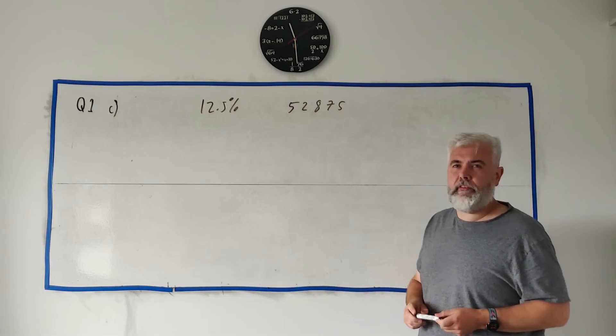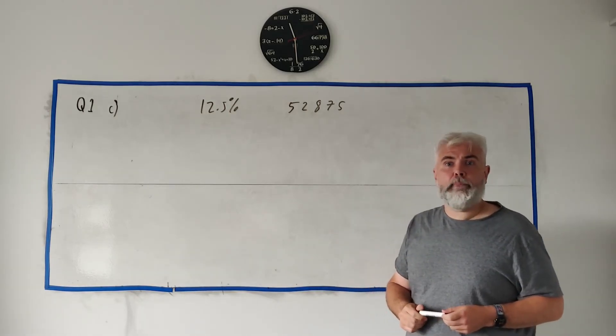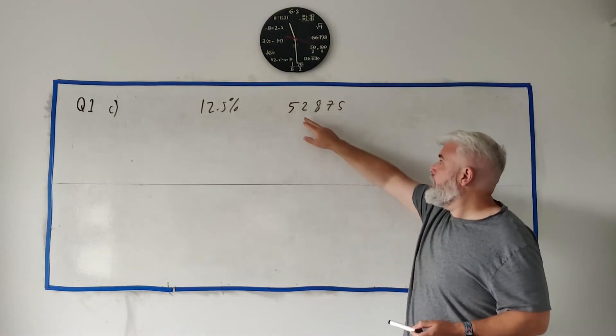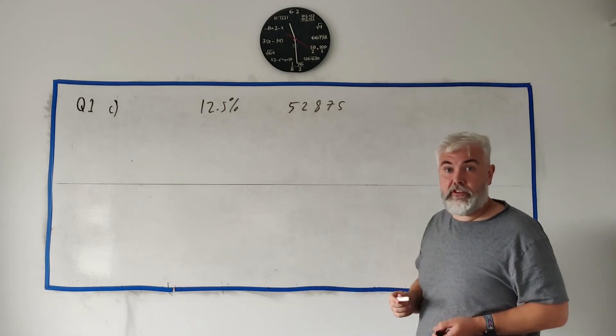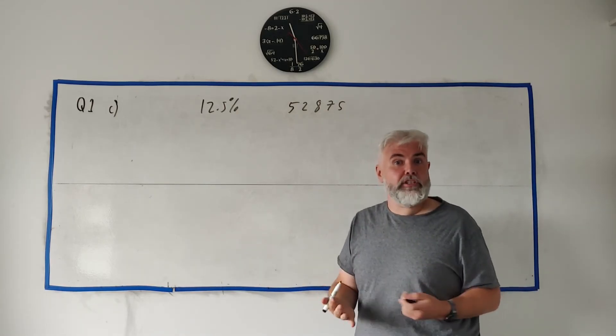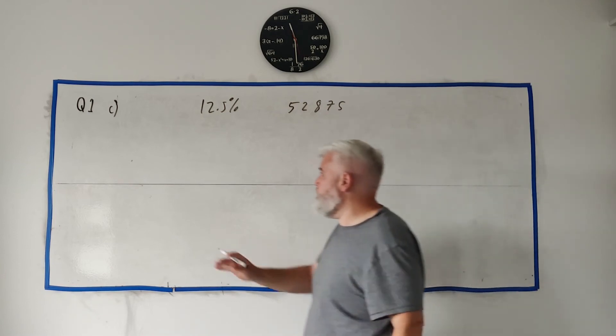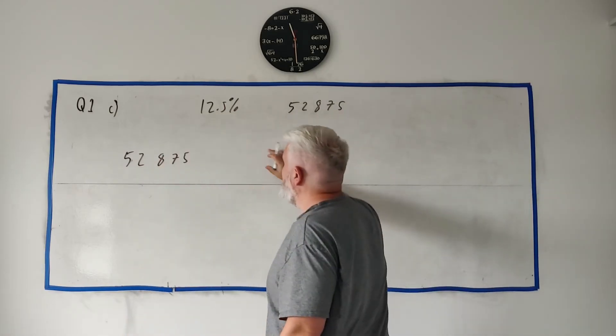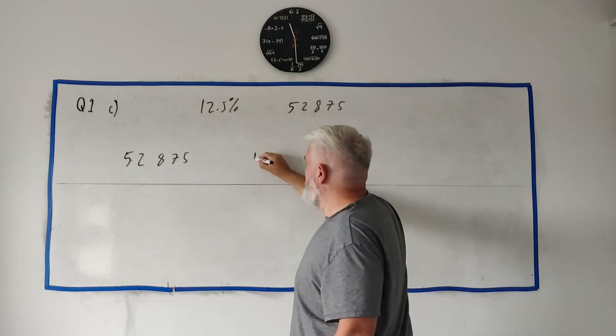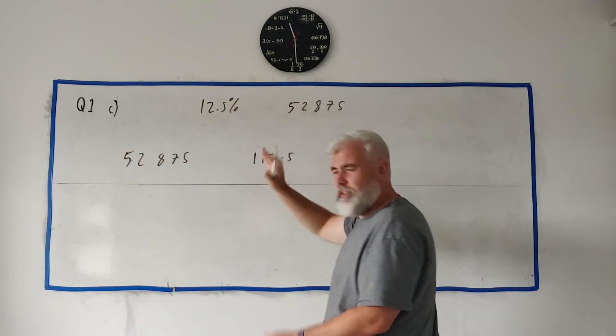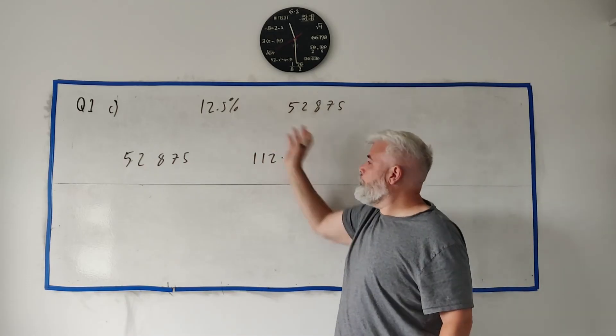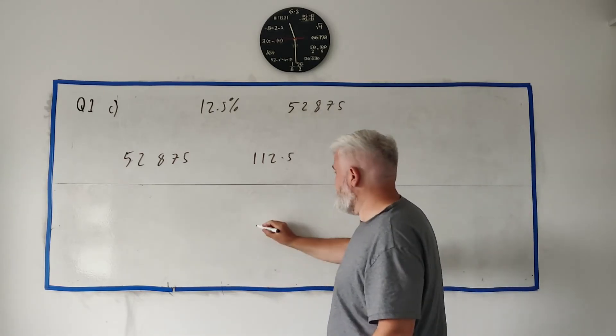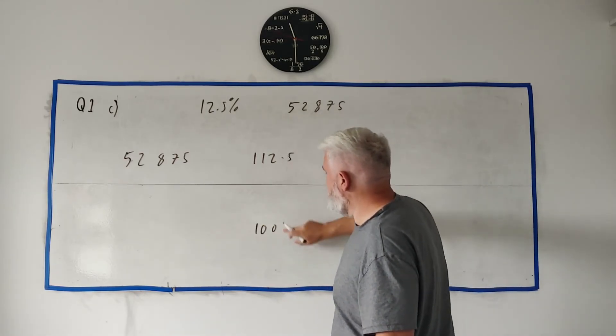Now for Part C we're told the farmer also bought some land and it has increased by 12.5 percent the value of the land and it's now worth 52,875. So they're simply asking how much did he buy the land for. Again I'm going to do this the same way I always do percentages. 52,875, what percent is that? Well it's gone up 12.5 so it's 112 percent. Once you can figure out what numbers line up to what it should be quite easy to get to it. They're asking you what the original price was, that's the 100 percent price, so we just need to get from here down to here, go through 1.